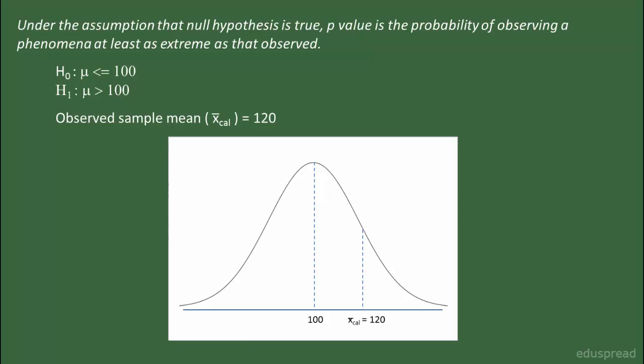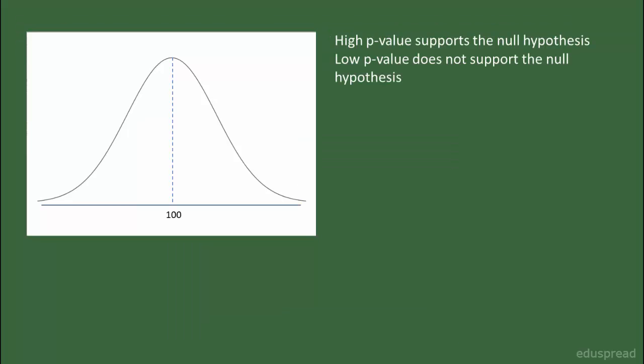And why is this a case of a right-tailed test? This is because we have the greater than sign in the alternative hypothesis — the alternative hypothesis is μ > 100. So in this example, the probability of this shaded region is the P-value. Now, let's discuss what is the use of this P-value and what it indicates. The rule is: a high P-value supports the null hypothesis, and a low P-value does not support the null hypothesis.